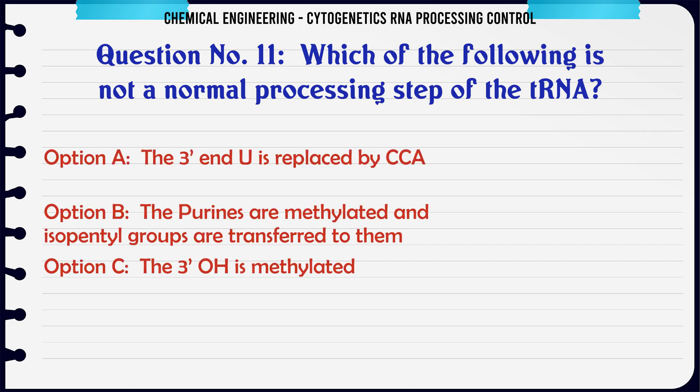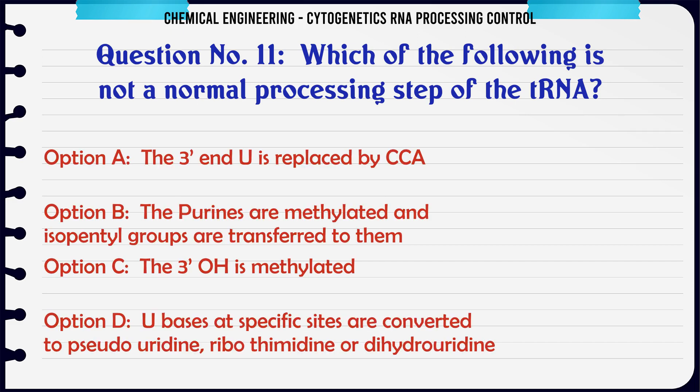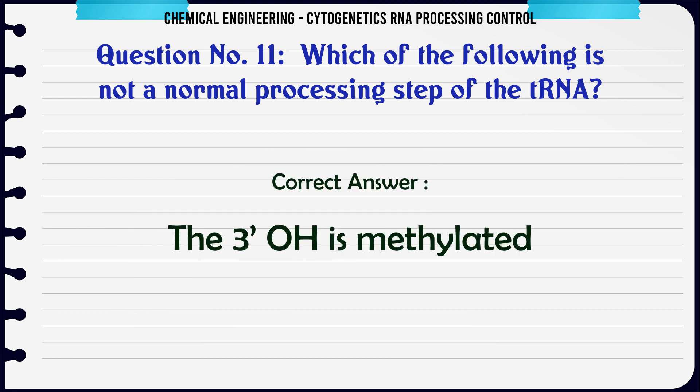Which of the following is not a normal processing step of the tRNA? A. The 3' end U is replaced by CCA; B. The purines are methylated and isopentyl groups are transferred to them; C. The 3'-O is methylated; D. U bases at specific sites are converted to pseudouridine, ribothymidine, or dihydrouridine. The correct answer is: the 3'-O is methylated.